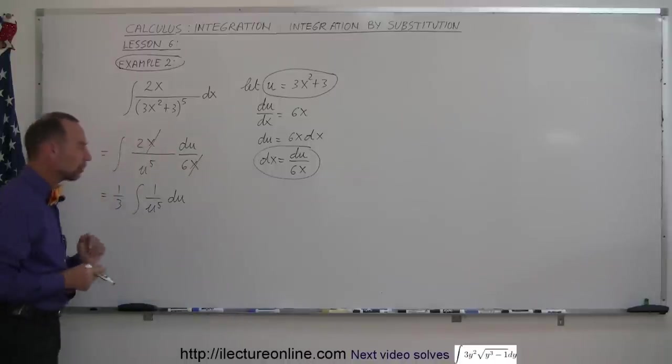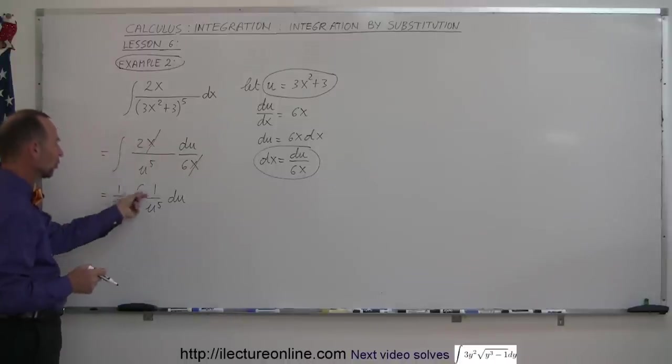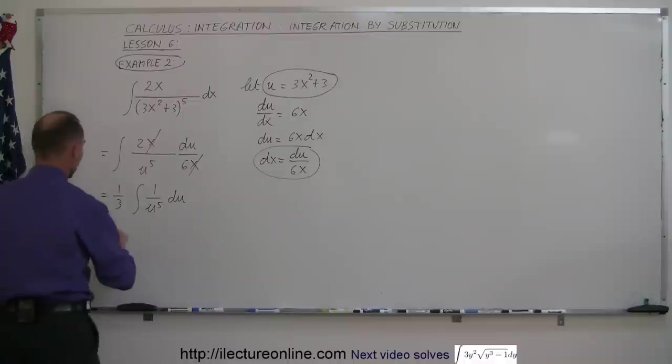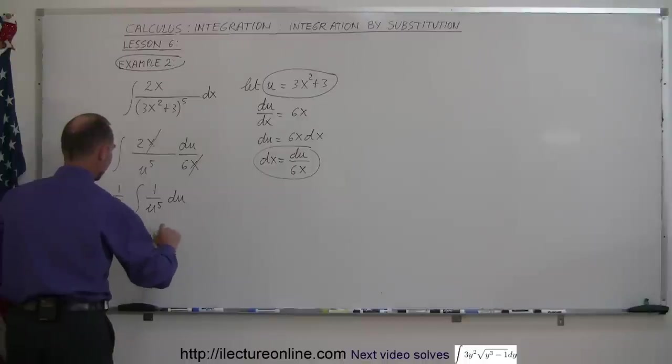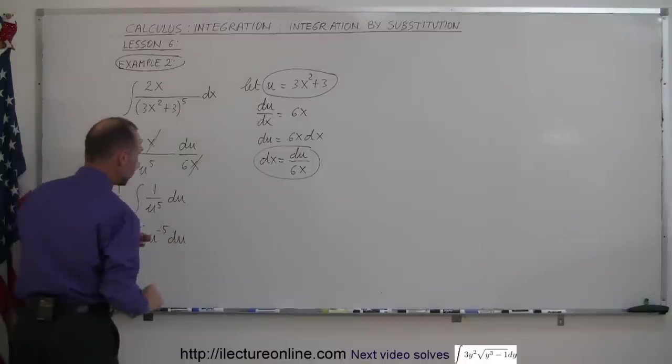And then of course when you have 1 over u to the 5th, what you're going to do is move this to the numerator and turn this into a negative exponent. So this is equal to 1/3 times the integral of u to the minus 5 du. And that you know how to integrate, because you simply use the power rule.